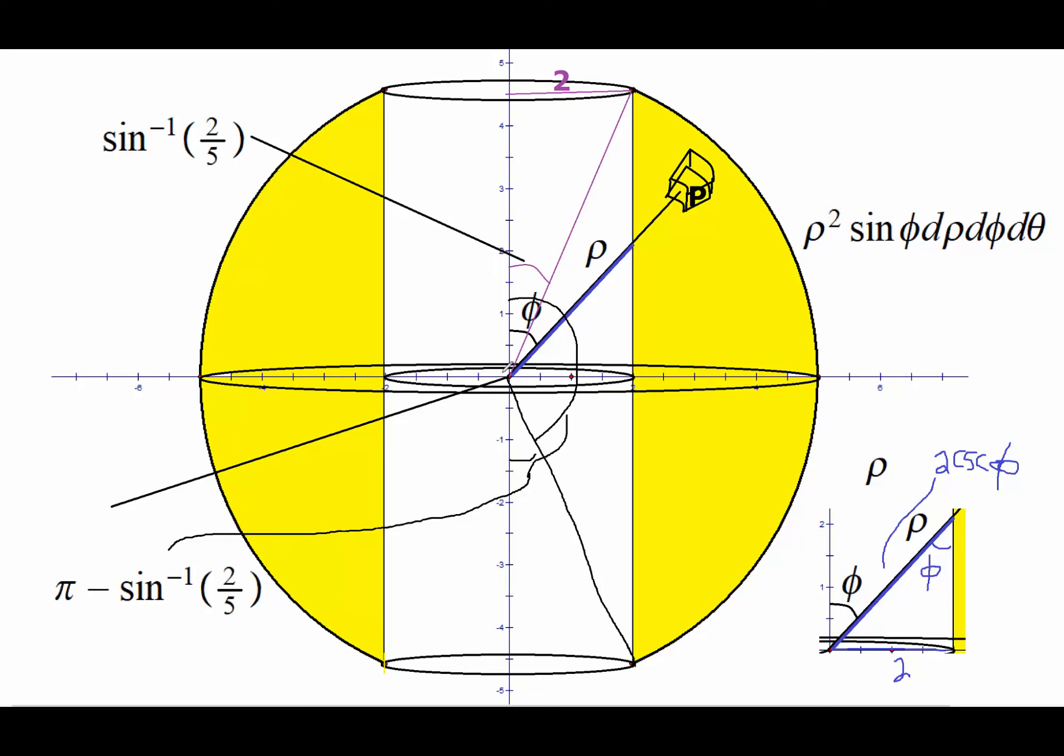And then for theta, we will have, since we are encompassing this whole thing, theta will vary from 0 to 2 pi. We are simply going to integrate this over rho, phi, and theta with the limits that we just found. Let's go ahead and evaluate it.